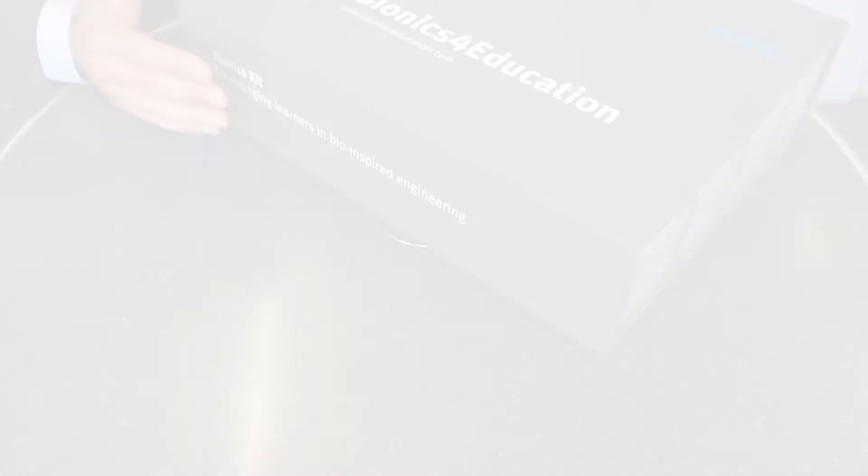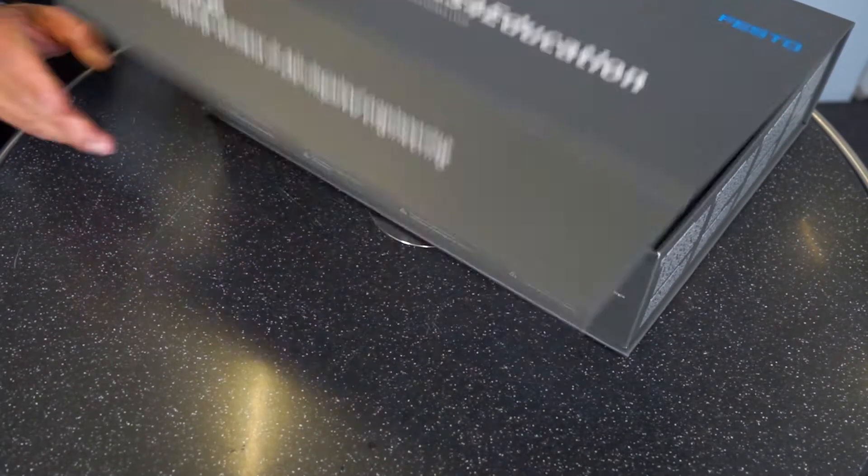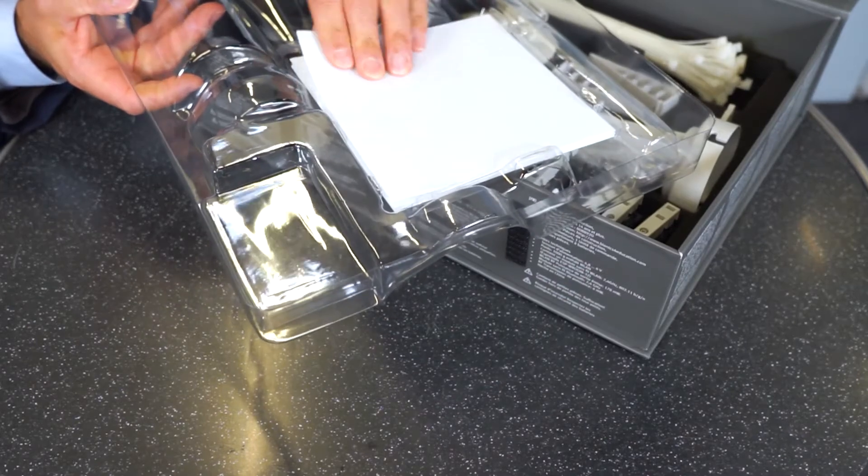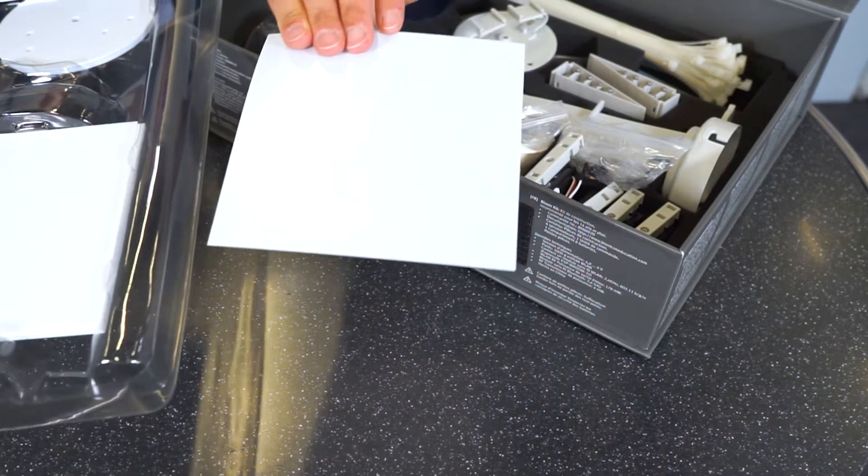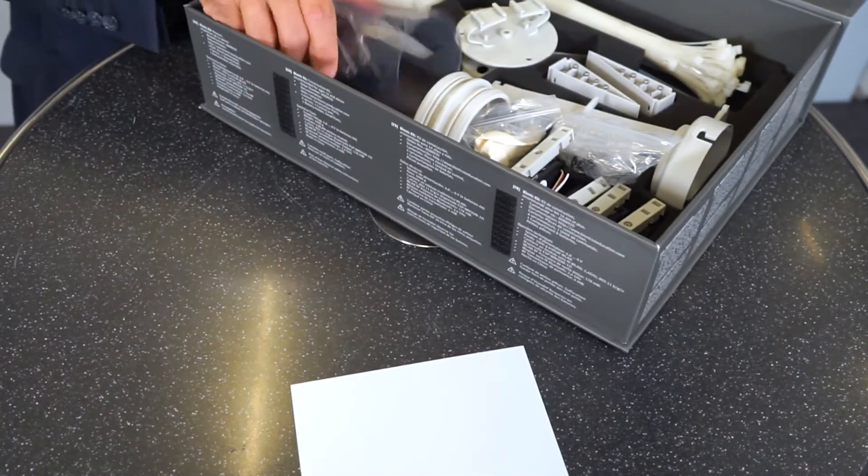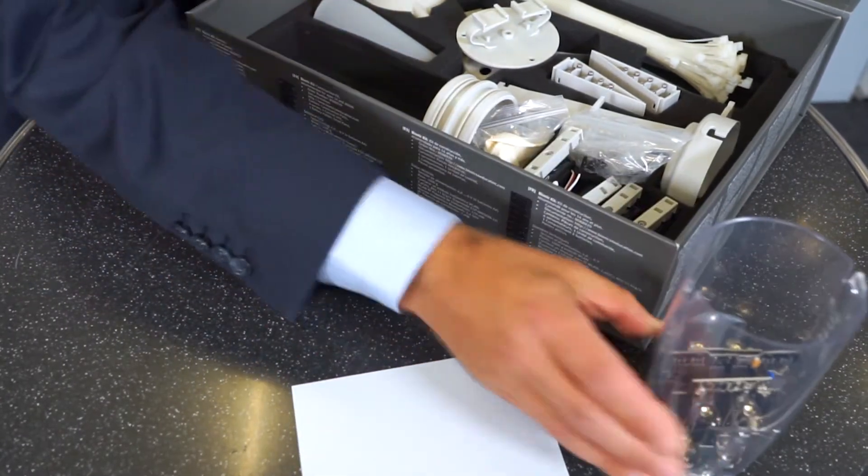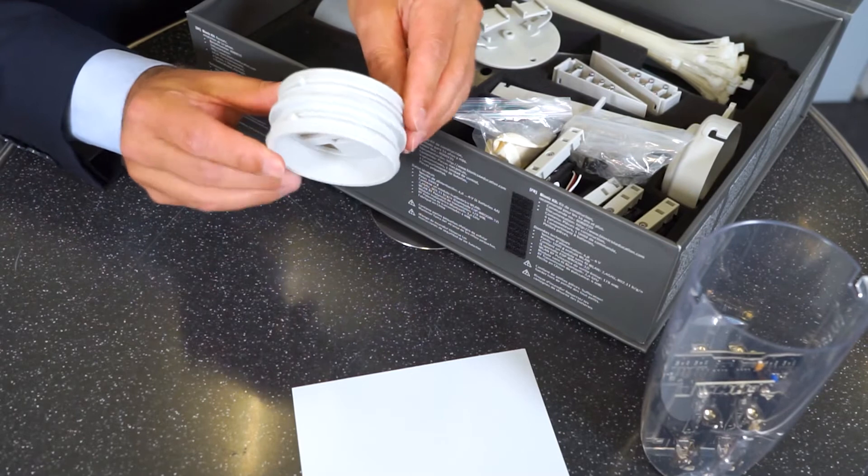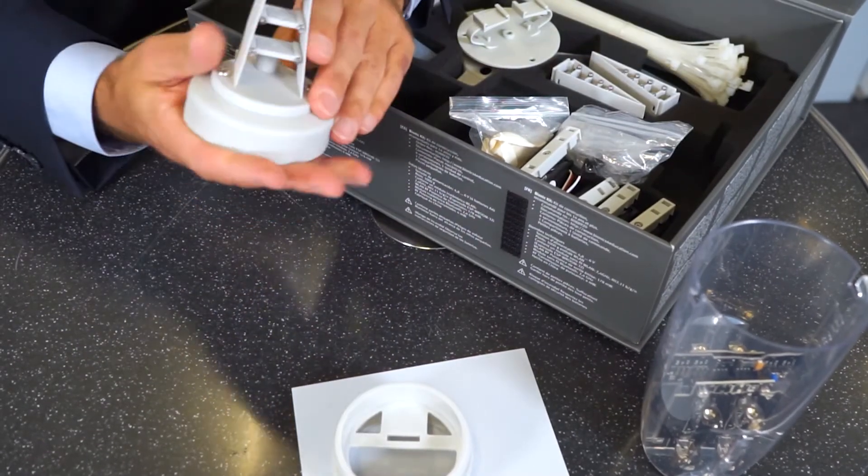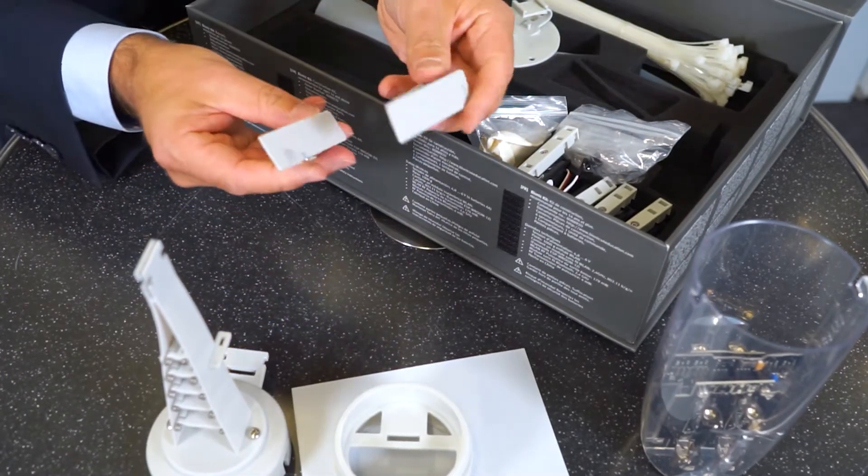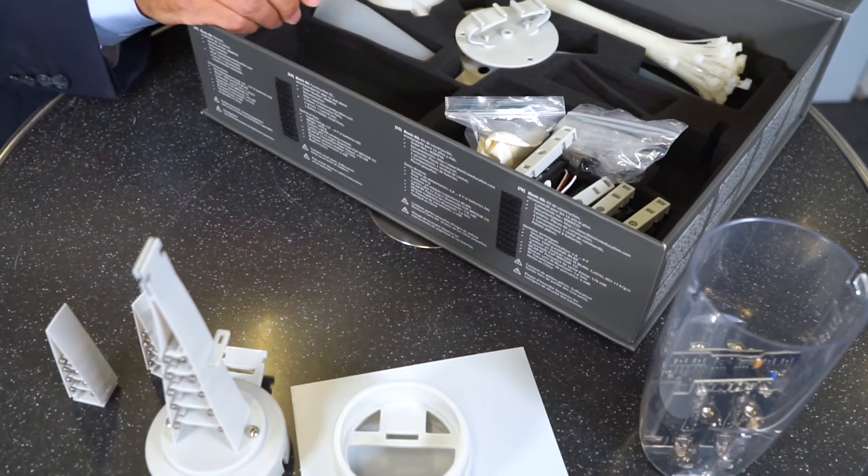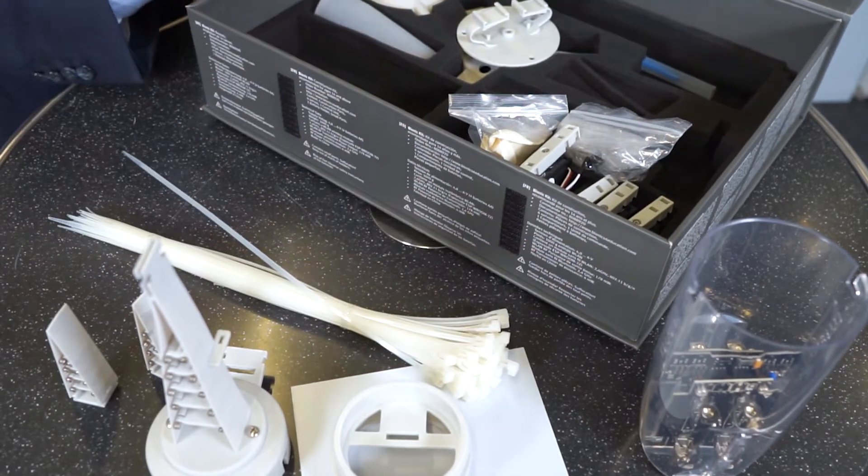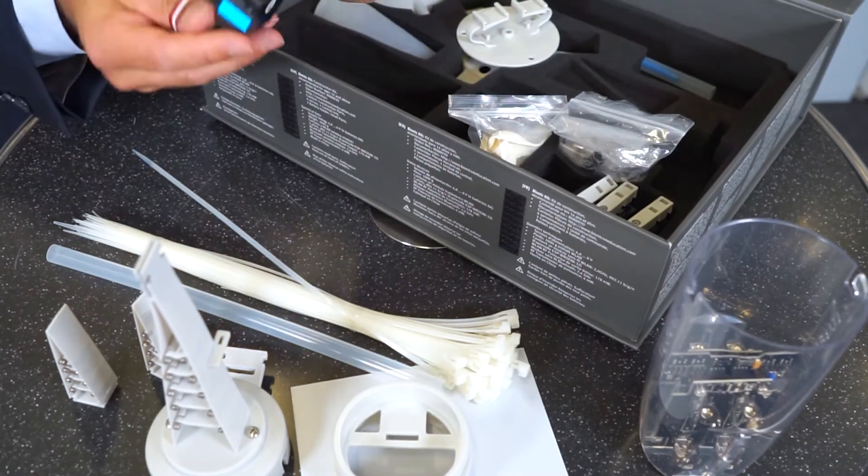Now we come back to our fish, to our biological role model. With the help of the Bionics Kit we want to assemble our own robot fish. Let's get the parts we need. Open the box and the first thing you see is a cover with plastic sheets we need for making the tail. Next we need the body of the fish with the controller inside, the central segment with the O-rings, the most important thing the fin ray, two smaller fin rays for the side tails, the cable ties and silicon tube, and last but not least the little servo motor.